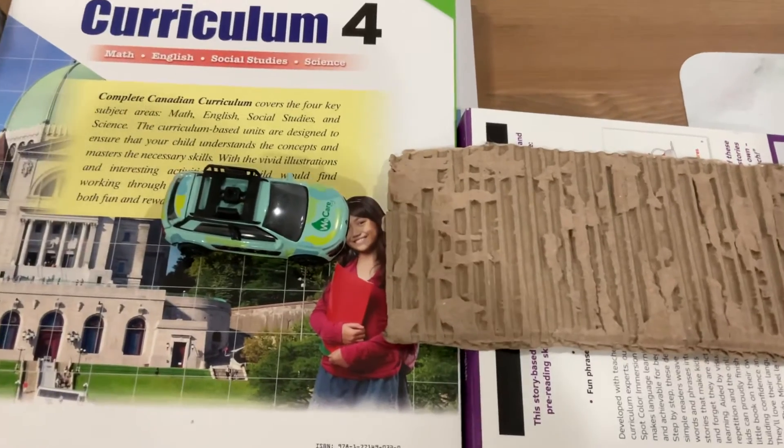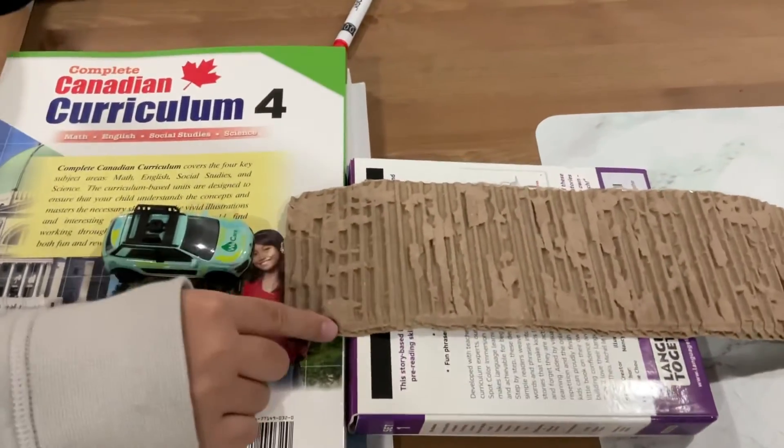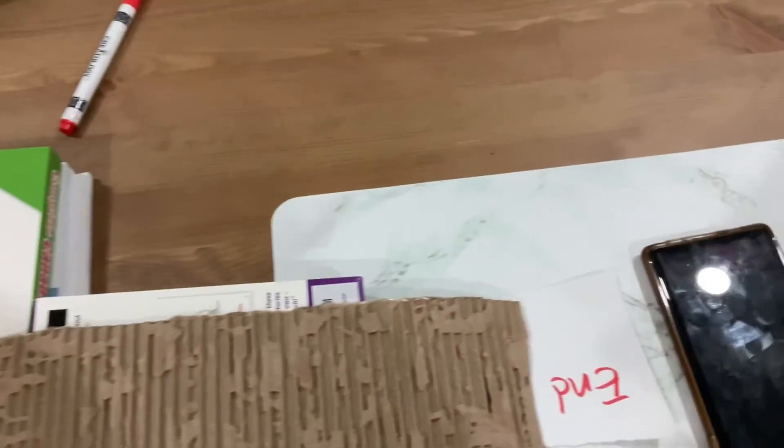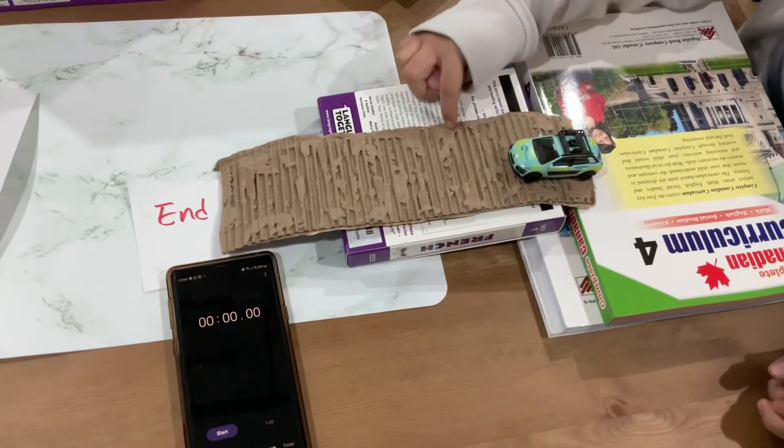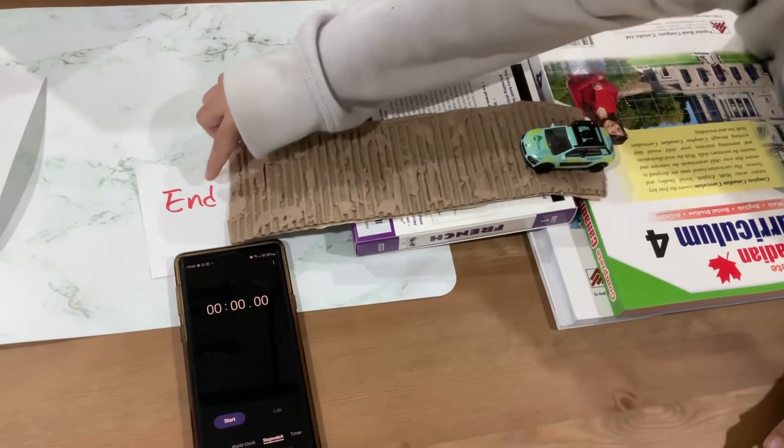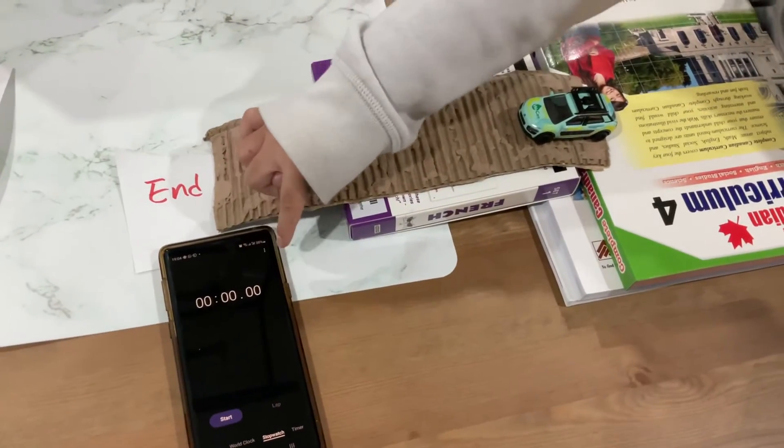Here are the books, the car, and the rough paper. This is the car, this is the books, this is the rough surface, and that is the end. And this is the stopwatch.